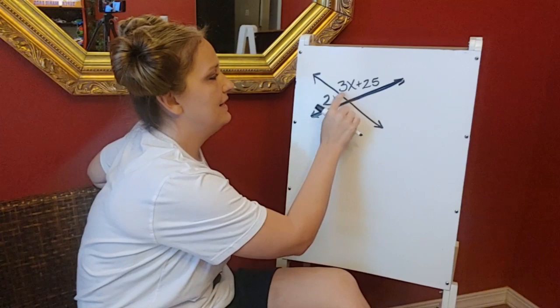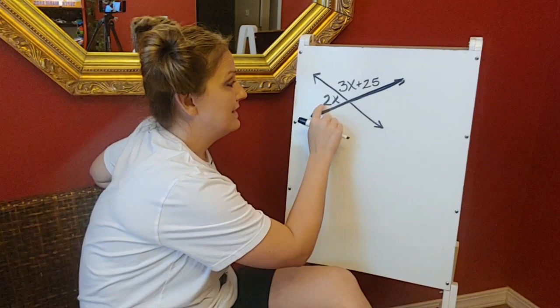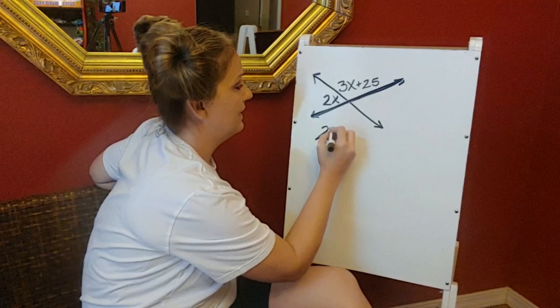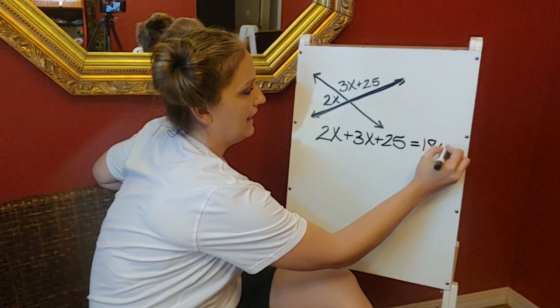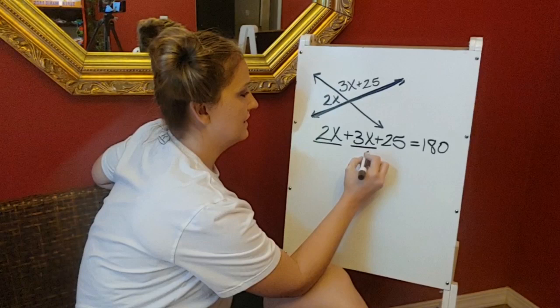So that's what I'm going to do. I'm going to take this angle, plus this angle, and set it equal to 180. So 2x plus, so we've got the first angle, 3x plus 25, there's my second angle, is equal to 180. So I'm going to combine my like terms. 2x plus 3x gives me 5x plus 25 equals 180.